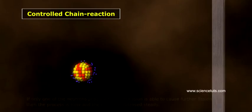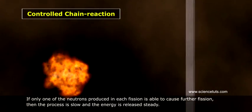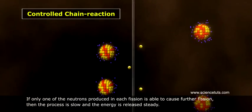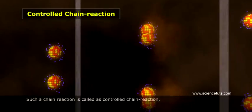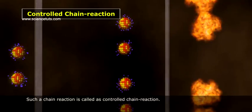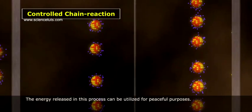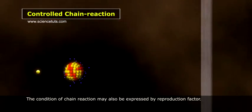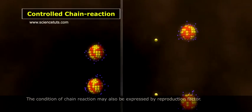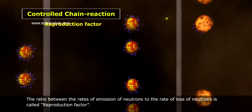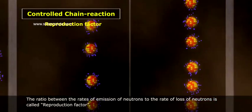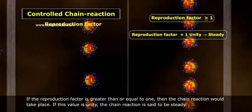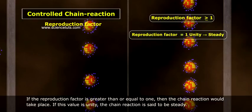In a controlled chain reaction, if only one of the neutrons produced in each fission is able to cause further fission, then the process is slow and the energy is released steadily. Such a chain reaction is called a controlled chain reaction. The energy released in this process can be utilized for peaceful purposes — this is what happens in a nuclear reactor. The condition of a chain reaction may also be expressed by a reproduction factor: the ratio of the rate of emission of neutrons to the rate of loss of neutrons. If the reproduction factor is greater than or equal to 1, the chain reaction would take place. If this value is unity, the chain reaction is said to be steady.